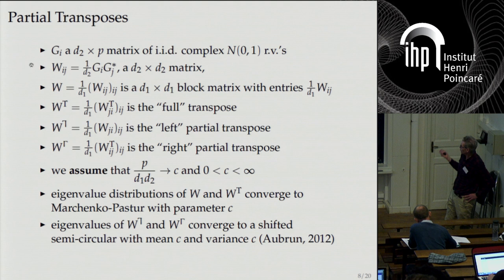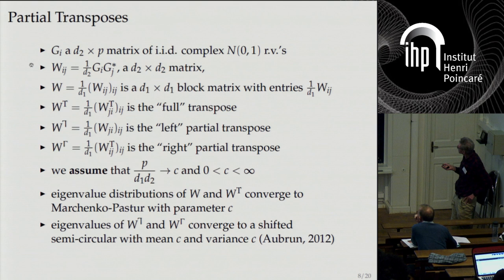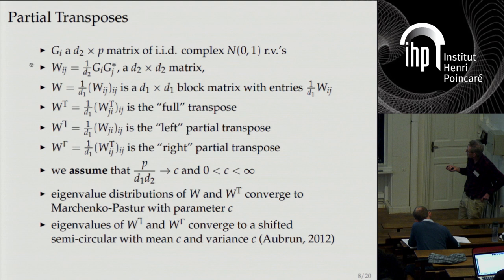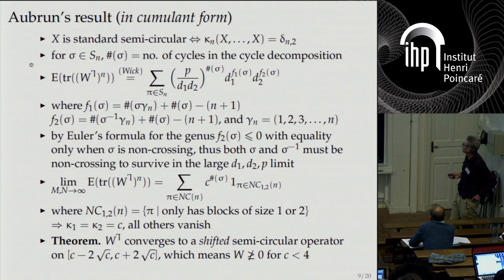If you transpose a Wishart matrix you get another Wishart matrix, so you always get a Marchenko-Pasteur limit distribution. Then about five years ago, Guillaume Aubrun showed something that was pretty surprising: when you partially transpose a Wishart matrix, you kill all the higher cumulants. The first two cumulants, kappa 1 and kappa 2, stay the same as for Marchenko-Pasteur, but you kill all the higher ones—kappa 3 and above. The only distribution with the first two cumulants different from zero is a semicircle, so you get mean c and variance c. I'm going to go back and look at Guillaume's calculation using the cumulant method.